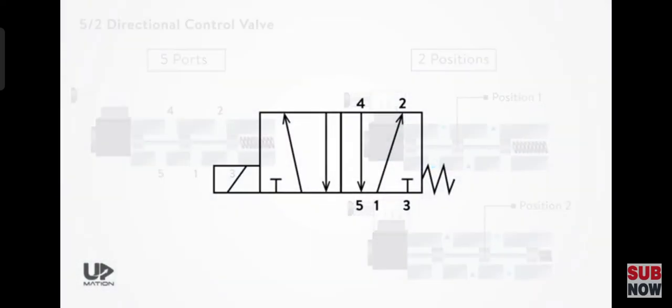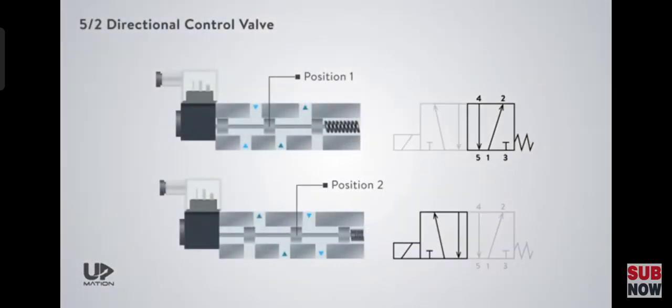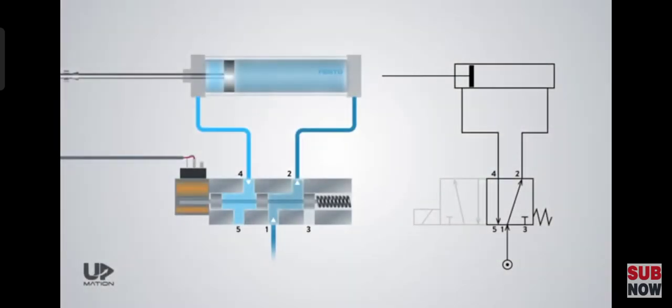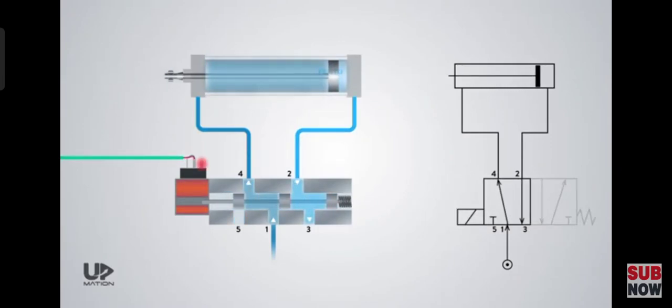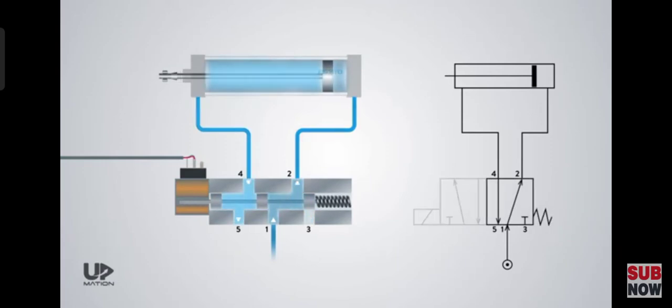Reading and interpreting the symbols may seem a little bit challenging sometimes. For instance, this directional control valve has such a symbol. Each square in the symbol represents a position or state. And in each state, some arrows show the path that air can flow through them on that specific position.